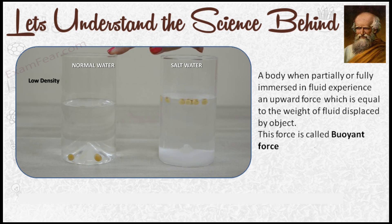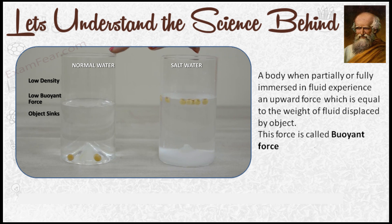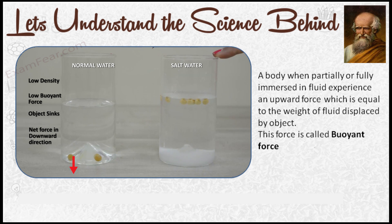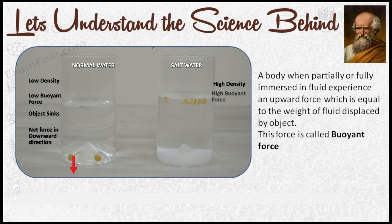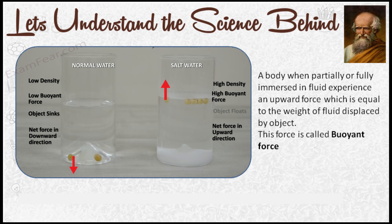In the first glass, the density of water is less, therefore the buoyant force is less, and as a result the body sinks because the net force acting on the body is in the downward direction. Whereas in the second glass, the density of the salt water is a lot more than normal water. As a result the buoyant force is more, so the net force acting on each of these beans is in the upward direction and therefore it floats.